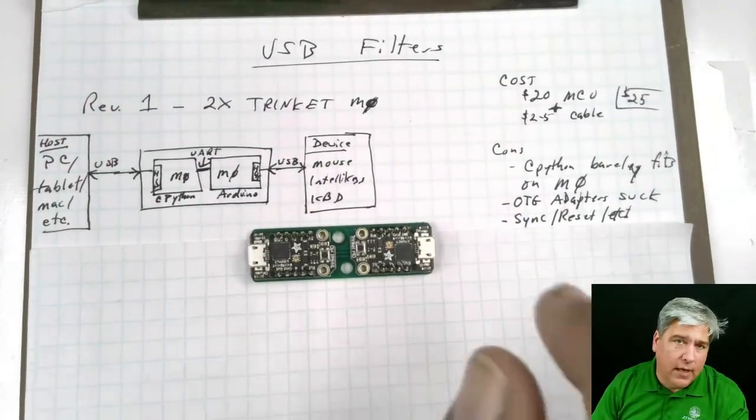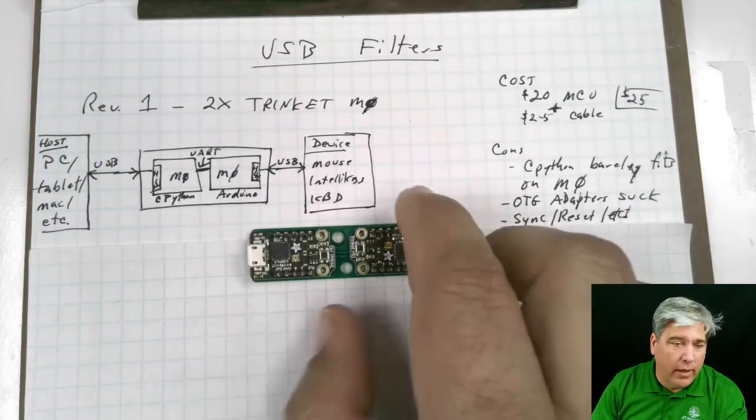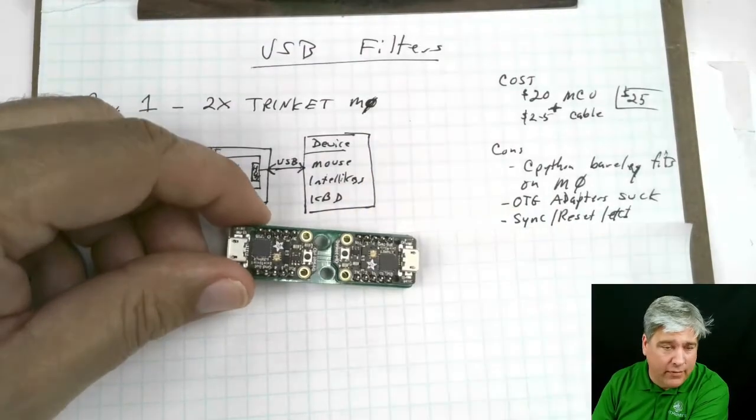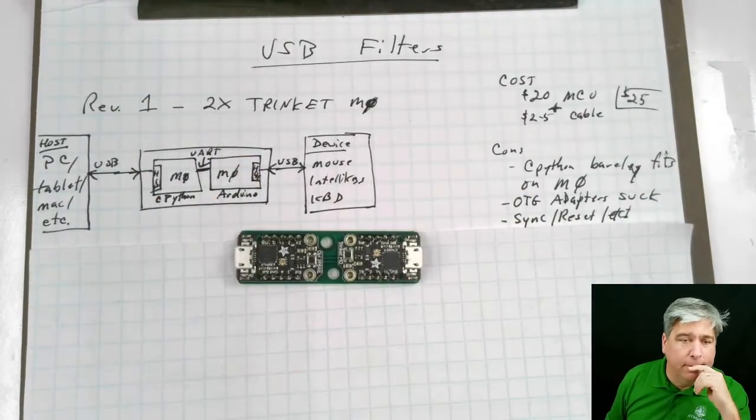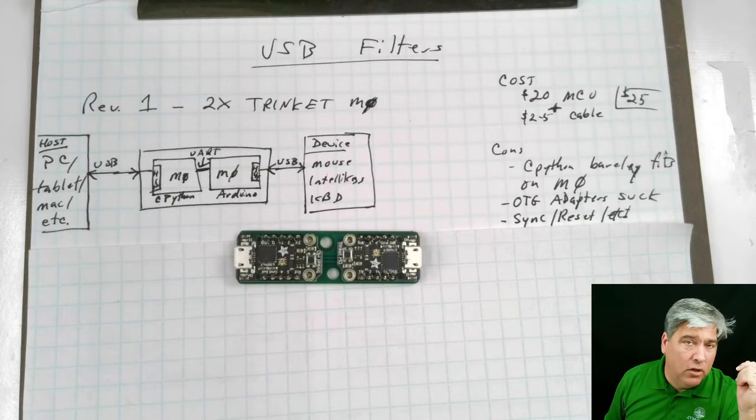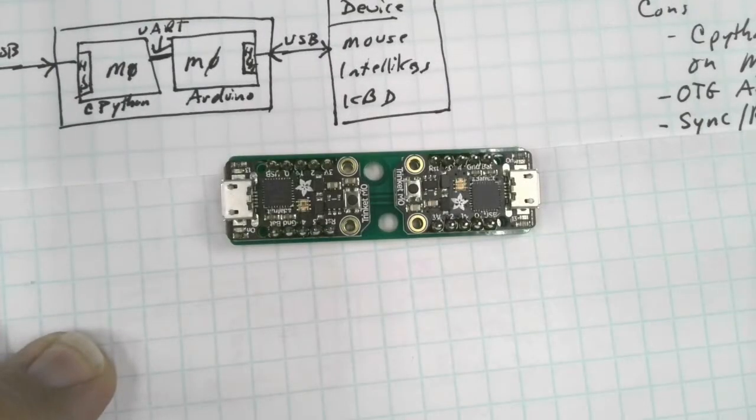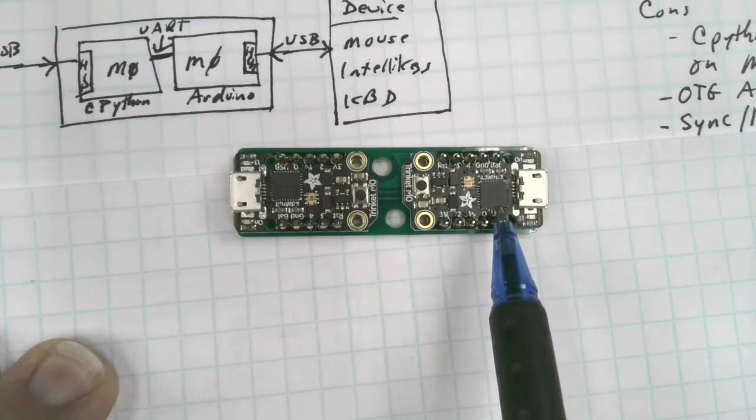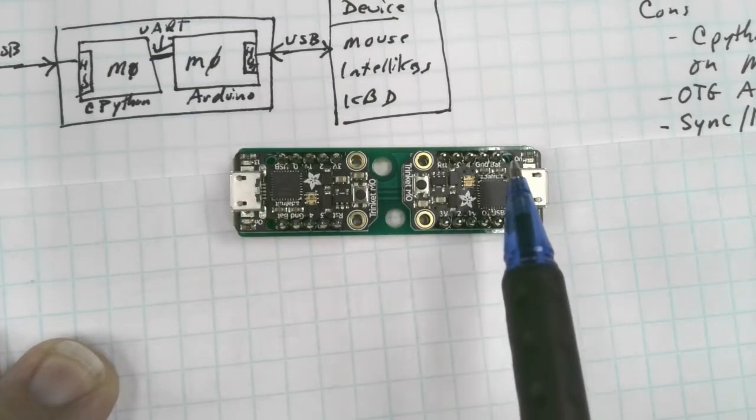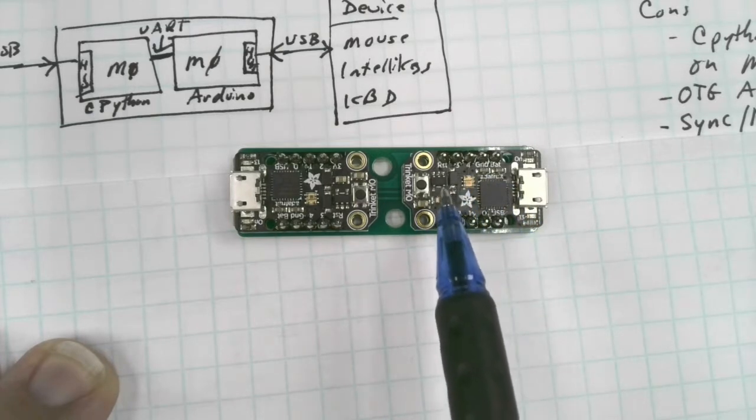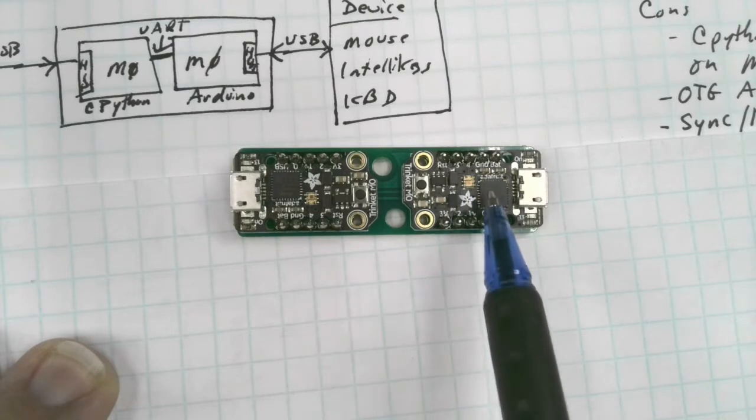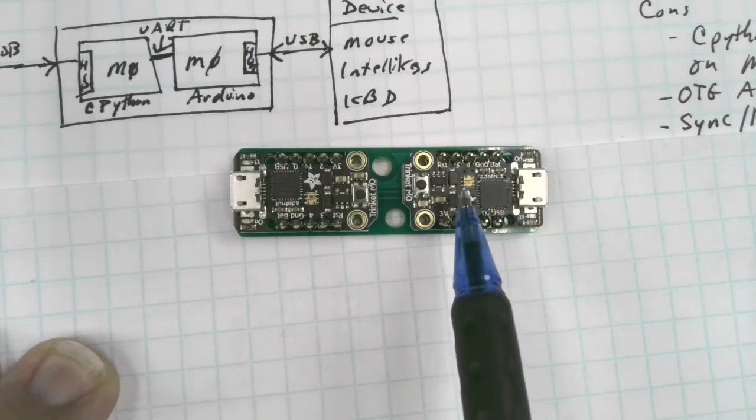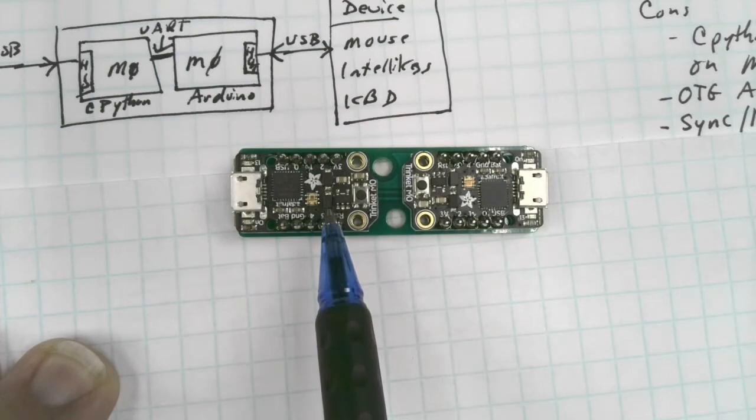This is the original USB filter, the one that we use in the IntelliKeys. This is what Riptide has been making for the past year or two now. It actually has two microcontroller boards on it. They're both Trinket M0s from Adafruit. They run on a SAMD-21 microcontroller, along with some basic power management and USB interface and memory. It's a very basic chip. They run between $8 and $10, depending on how many you buy. So with two of these, it costs about $20 for the microcontroller.